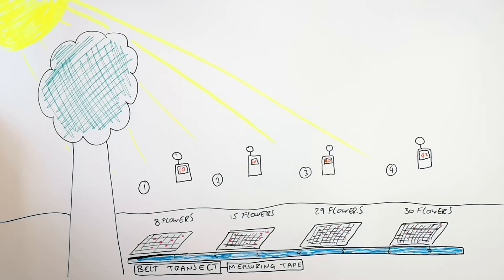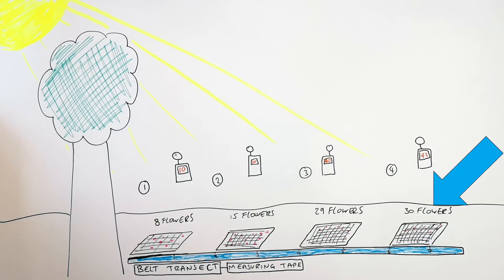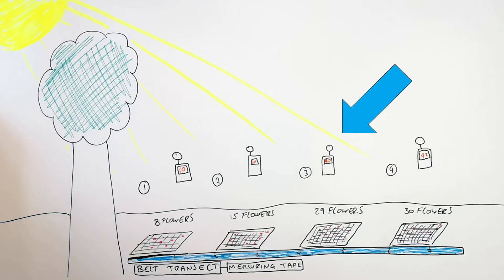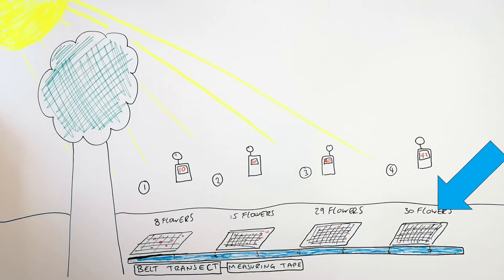You can then make a conclusion based on your results. As the light intensity increased away from the tree, the abundance of flowers in each quadrat also increased. So that means as you increase sunlight, you increase the abundance of flowers.